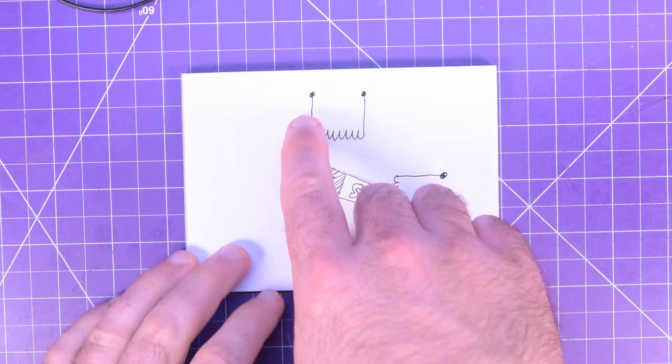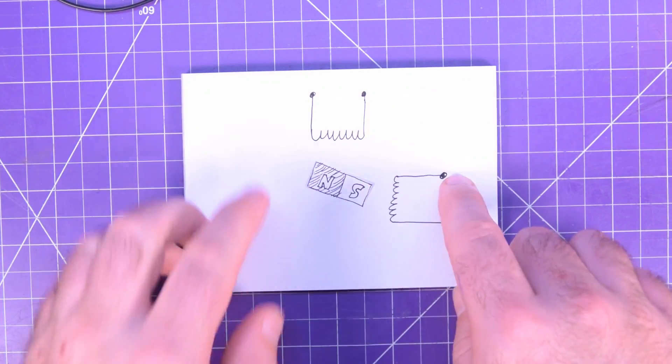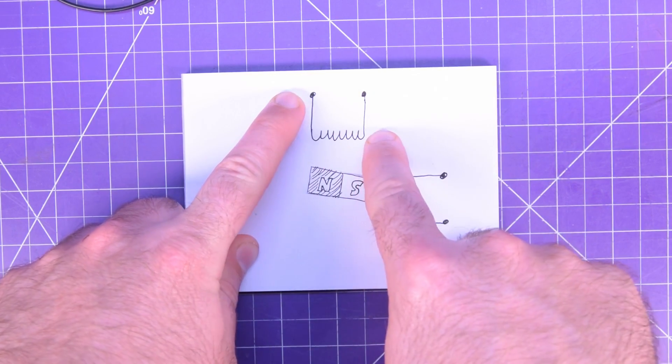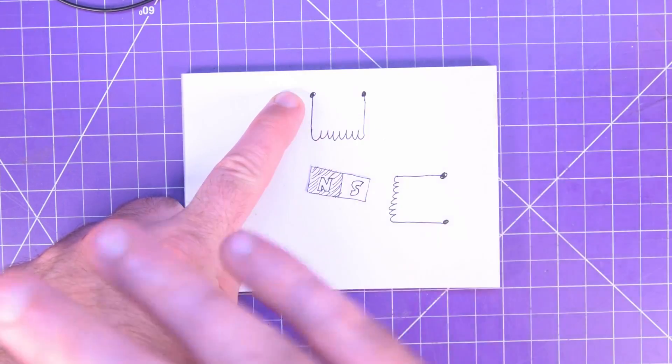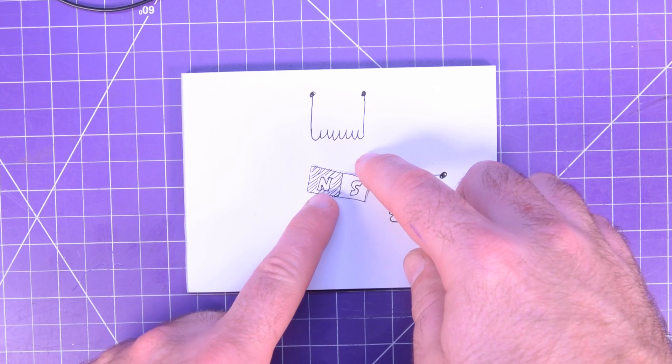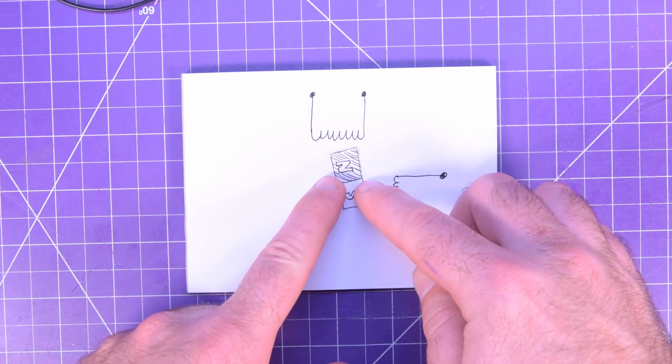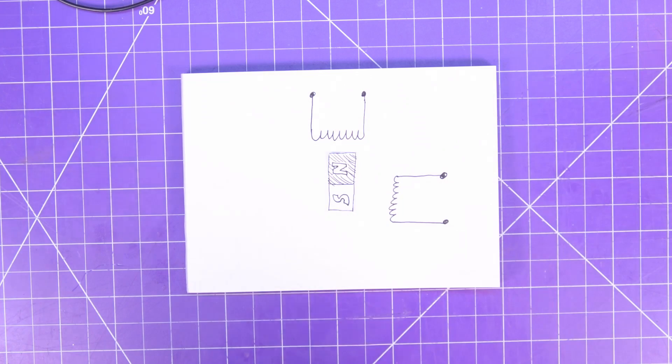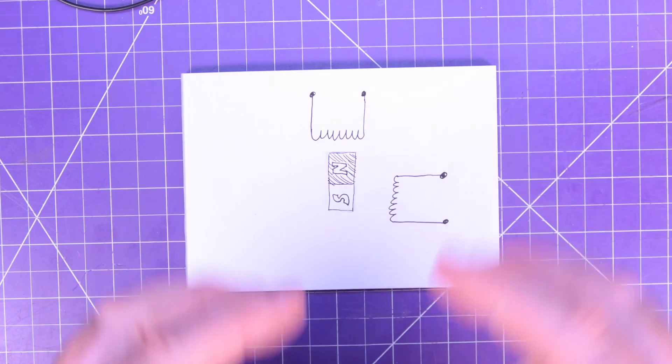All right, so what happens is you put current through this winding, let's say positive on this side, negative on this side. That makes an electromagnet with a south pole in our example. What will happen is that south pole will attract our rotor, attract the north side of our rotor. And then it'll just stay in that orientation. It'll take a step if you will.